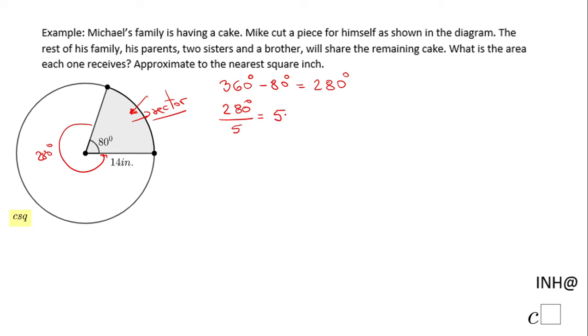We get 56 degrees. Each member in the family is going to get a piece that is smaller than Michael's: 56 degrees each.